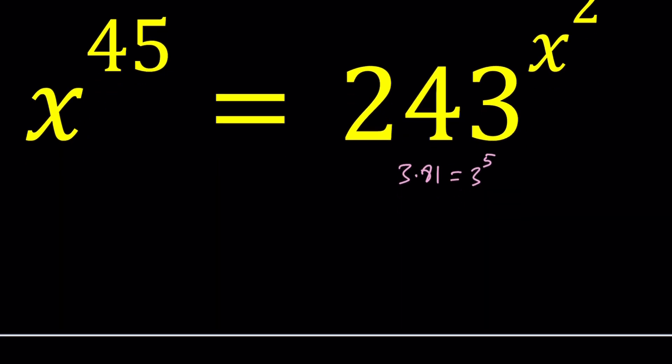I can write x^45 as (x^9)^5, because 9 times 5 is 45, right? And on the right-hand side, I have 243, which I can write as 3^5, and then of course, I need to raise it to the power x squared. Get it?